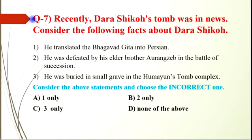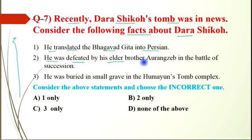Question number 7: recently Dara Shikoh's tomb was in news. Consider the following facts about Dara Shikoh. Statement 1: he translated the Bhagavad Gita into Persian. Statement 2: he was defeated by his elder brother Aurangzeb in the battle of succession. Statement 3: he was buried in a small grave in Humayun's tomb complex. Except statement 2, all are correct. So the option will be B, second only, as statement 2 is incorrect.